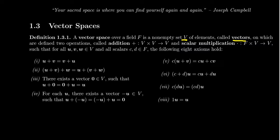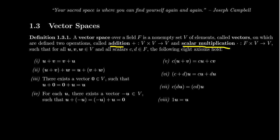What's a vector space? The definition is going to feel very similar to a field, although the elements of a field we call scalars. A vector space will have something which we call addition. Because the field itself has addition, sometimes we have to distinguish these two additions. For a vector space, this is sometimes called vector addition, and the addition over the field we might call scalar addition, if we need to distinguish between the two. So one operation will be vector addition, and the other operation will be scalar multiplication.